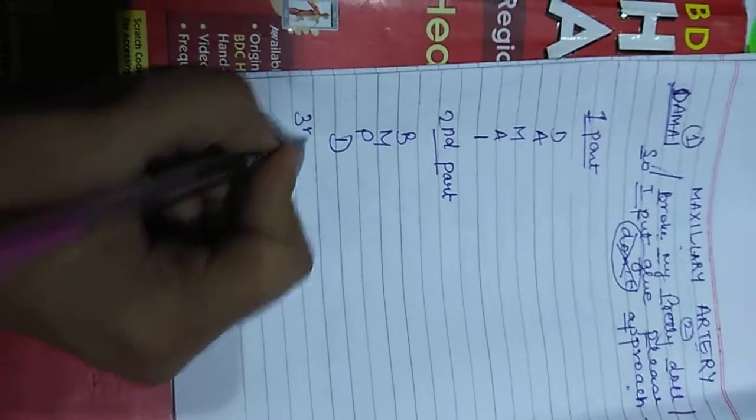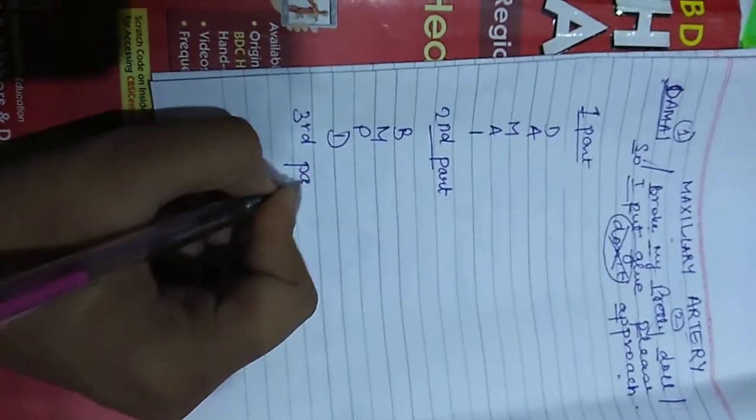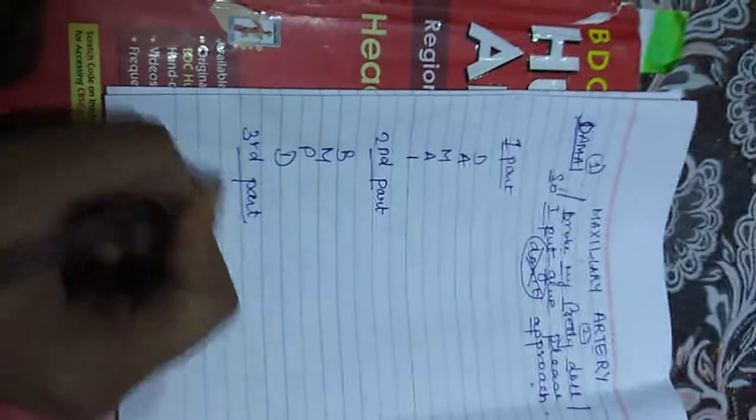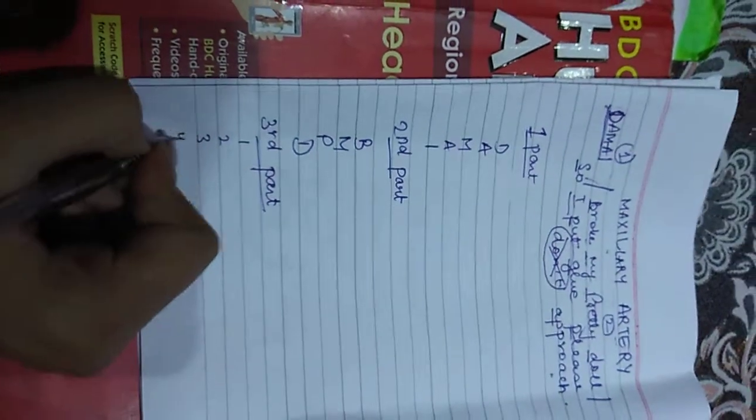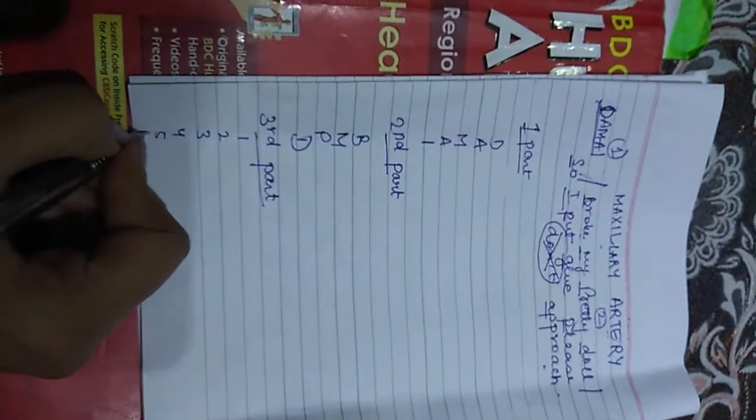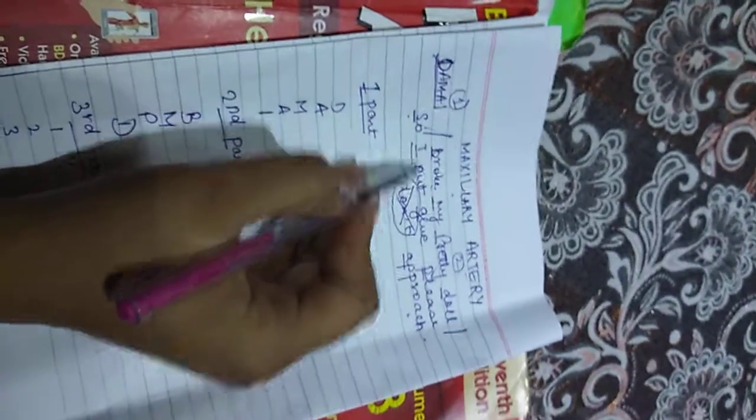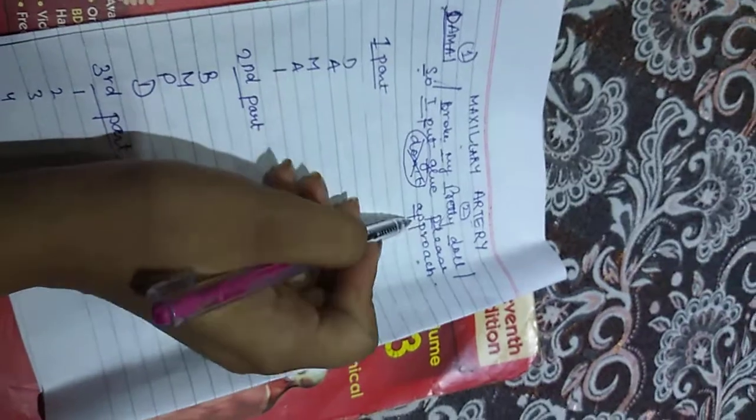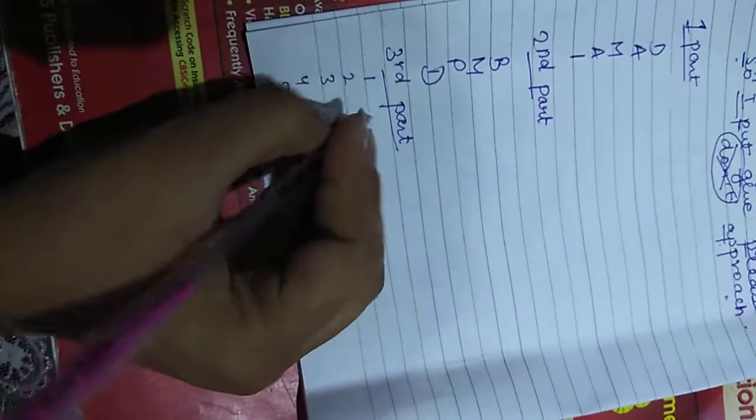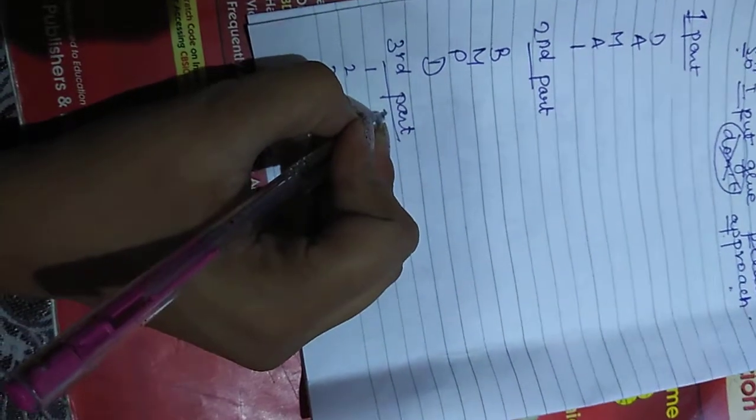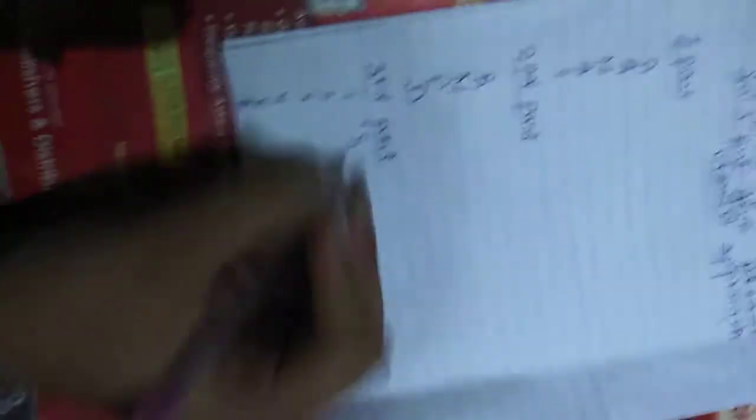In the third branch or in the third part of the maxillary artery, the branches which come out are six branches: one, two, three, four, five, six. So these branches are something like S, I, P, G, P, A. I'll be writing this out here.